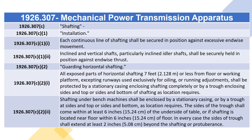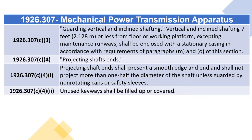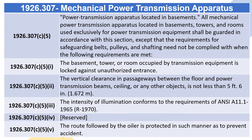1926.307(c)(3) Guarding Vertical and Inclined Shafting: Vertical and inclined shafting seven feet or less from floor or working platform, excluding maintenance runways, shall be enclosed with a stationary casing. 1926.307(c)(4) Projecting Shaft Ends: Projecting shaft ends shall present a smooth edge and end and shall not project more than one-half the diameter of the shaft unless guarded by non-rotating caps or safety sleeves. Unused keyways shall be filled up or covered. 1926.307(c)(5): All mechanical power transmission apparatus located in basements, towers, and rooms used exclusively for power transmission shall be guarded in accordance with this section.